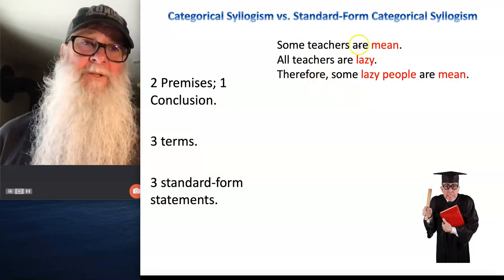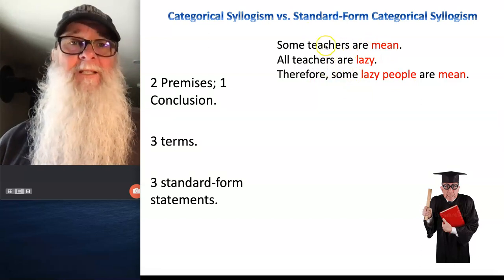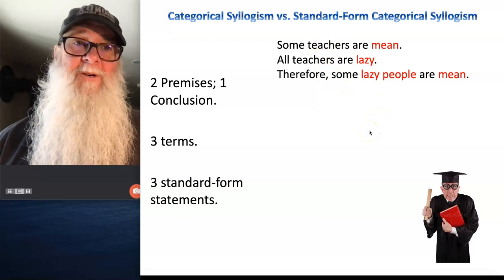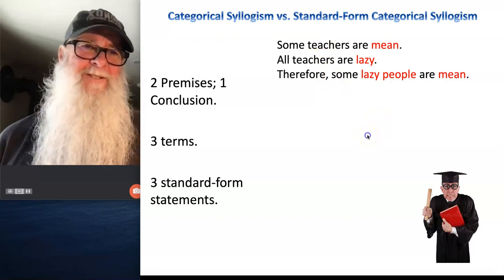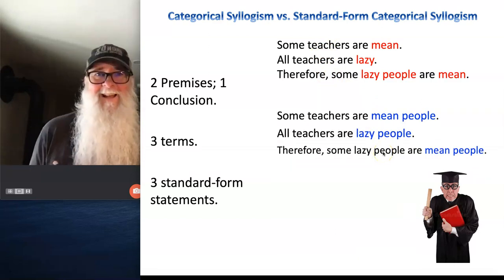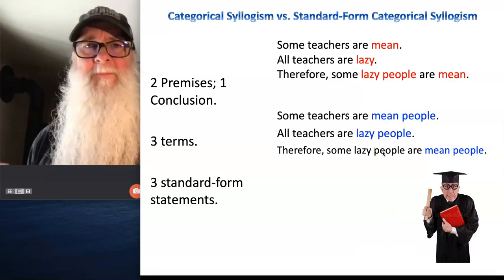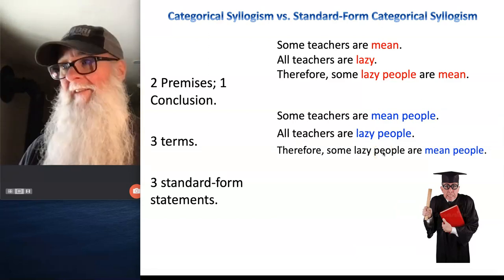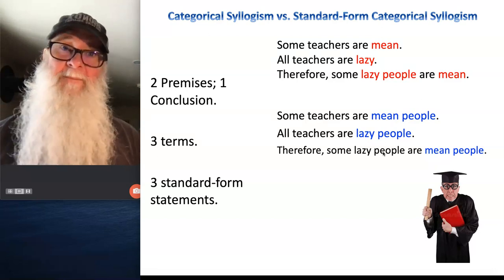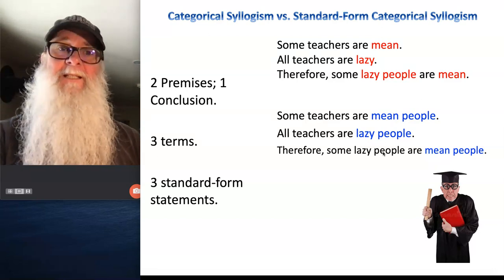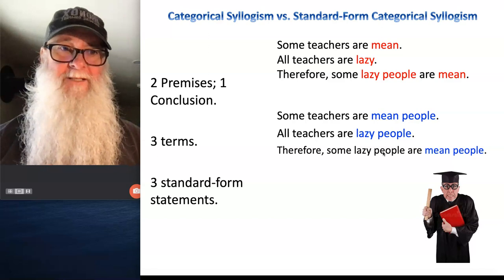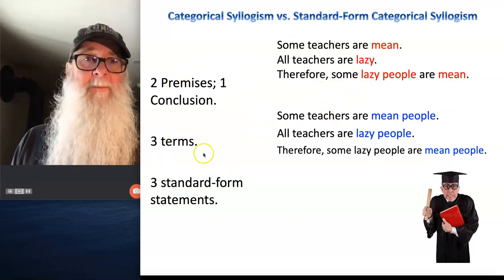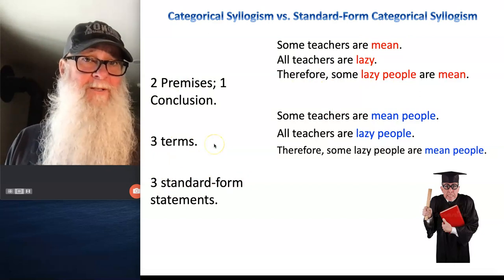So the first thing we want to make sure we do is translate our premise and conclusion statements into standard form categorical statements. You'd say this is easy — I'm just going to change 'mean,' which is not a countable plural noun or noun phrase, to 'mean people.' I can have five mean people. Same thing with 'lazy' — just translate that into 'lazy people,' because I can have 20 lazy people. Now we've got an argument that meets the requirements for being a standard form categorical syllogism.